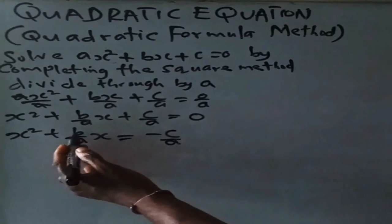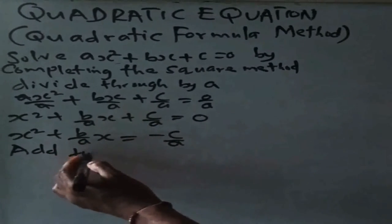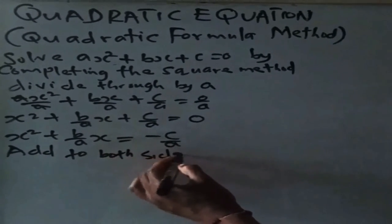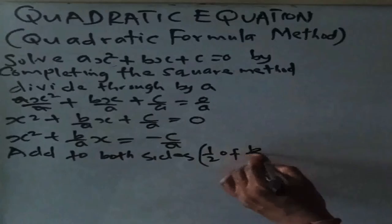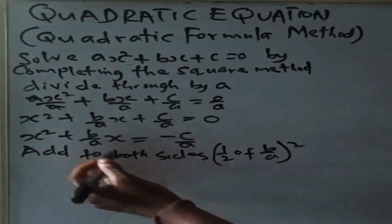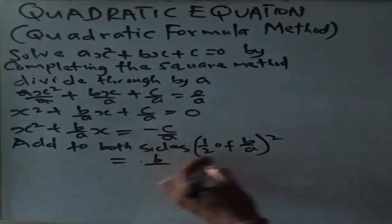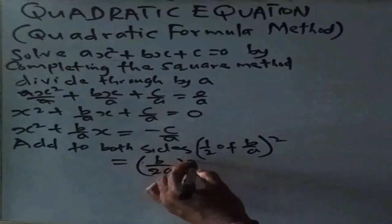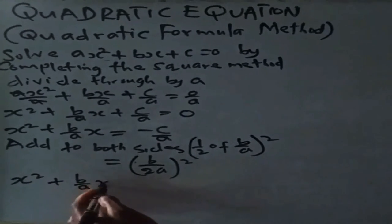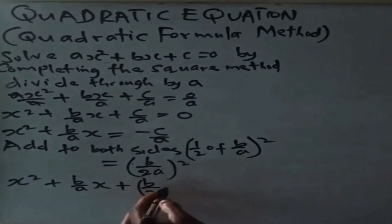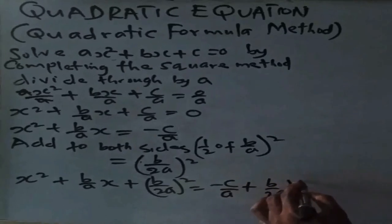Step 3: the coefficient of x is b over a. Add to both sides the square of half of the coefficient of x, which is b over 2a, all squared. So we have x squared plus b over a times x plus (b over 2a) squared equals minus c over a plus (b over 2a) squared.